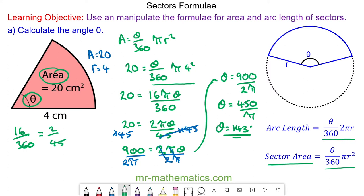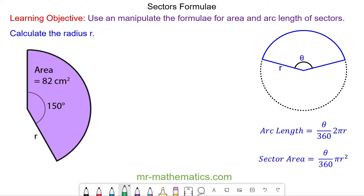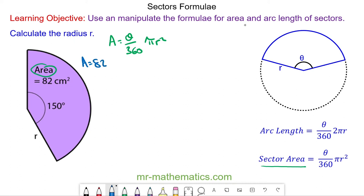Let's try another question. We've again been given the area, so we're going to use the area formula: area equals theta over 360 times πr². We've been given the area as 82, theta as 150 degrees, and we're being asked to work out the radius. Substituting: 82 is equal to 150 over 360 times pi times r².